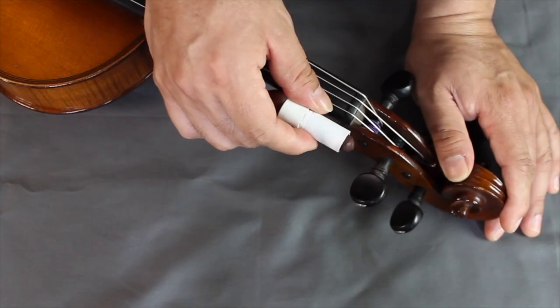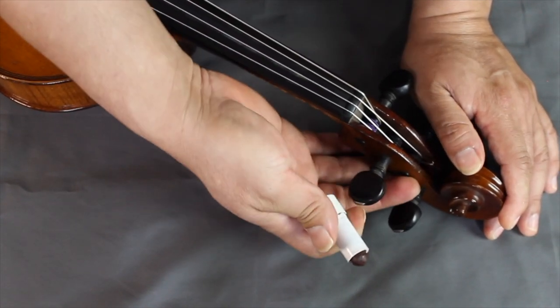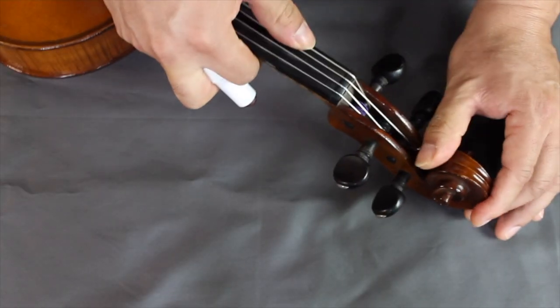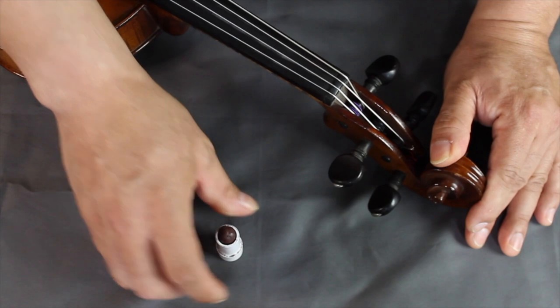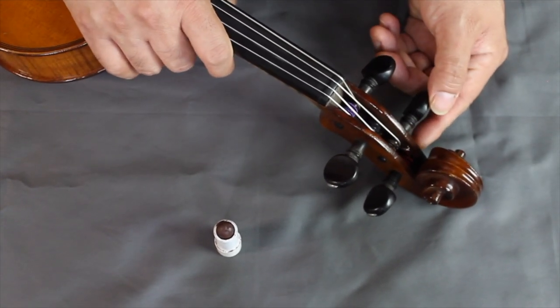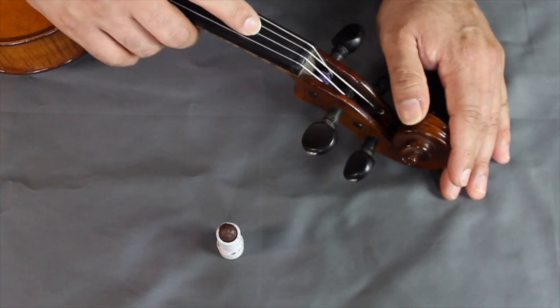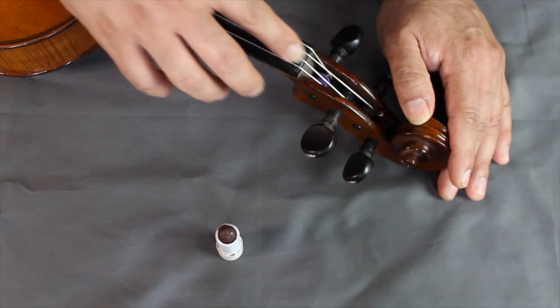But what this is is some kind of very solid grease that lubricates the surface of the peg and allows it to turn smoothly. So it's very simple, and before you do this, make sure you watch the video about how to change a string because we're going to do pretty much the same procedure, except that we are not necessarily replacing this string. This string is perfectly fine.